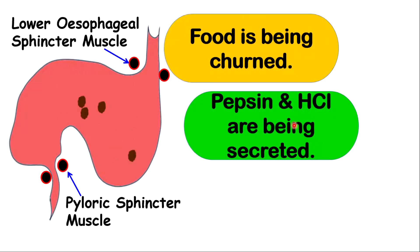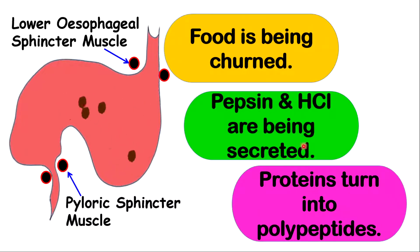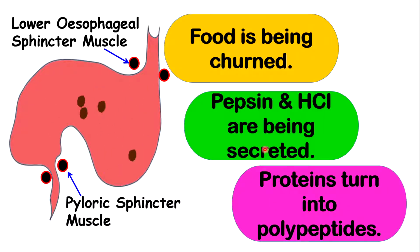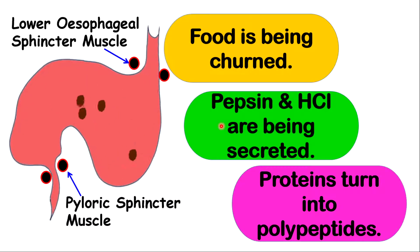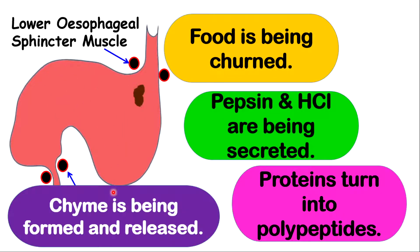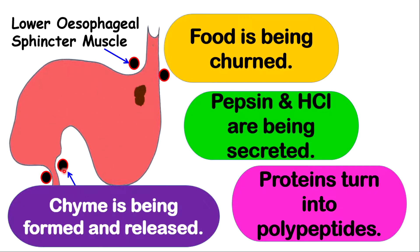Hydrochloric acid also helps to start breaking down food particles. Proteins will turn into polypeptides. Because of the presence of hydrochloric acid, the content of the stomach is acidic. The mixture of gastric juice — which includes pepsin, hydrochloric acid, mucus, and other substances such as water — when it mixes with the food, it forms chyme. Chyme will be released into the small intestine by the pyloric sphincter muscles.